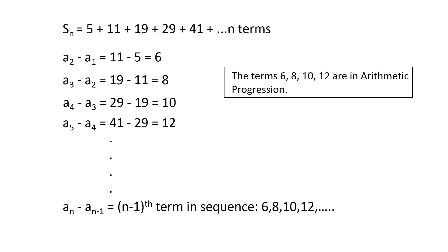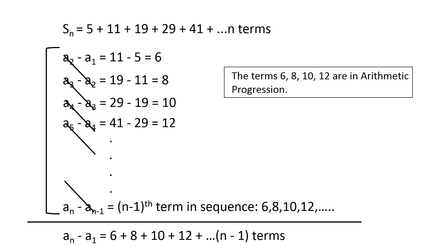Now if we add up all the equations, the first term on the left side of each equation gets cancelled by the second term on the left side of the next equation. We are left with an minus a1 equals sum of an arithmetic progression, that is, 6 plus 8 plus 10 plus 12 and so on up to n minus 1 terms.